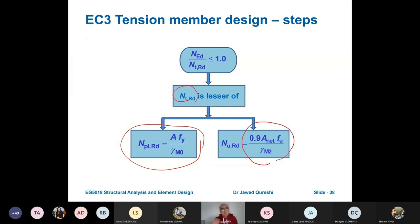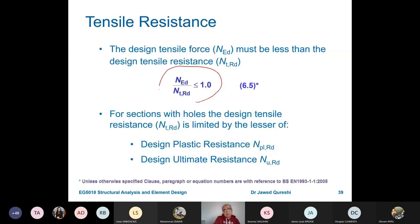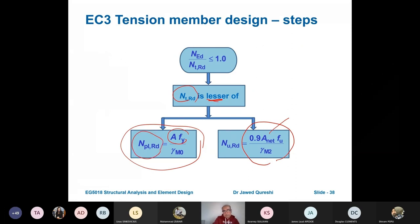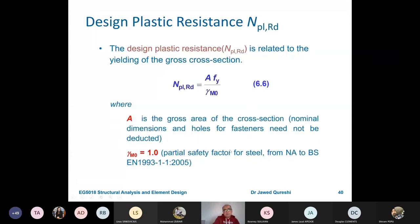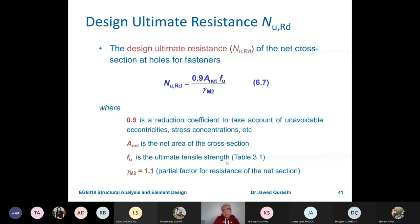Certainly you would say there will be bolt holes, it's going to be connected, so that's why we will need net area. NTRD has to be the lesser of these two values. So pretty much in everything, we will compare applied versus the resistance. NTRD is the tensile resistance. NTRD is the one which I used a little earlier, and I will show you in a minute. So this is the same formula, only addition is gamma M0, which is 1 according to Eurocode and the national annex.